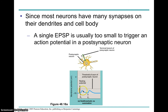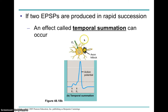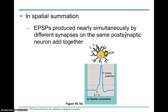For example, we have an EPSP that is too small to elicit an action potential because it doesn't reach threshold, followed by another EPSP, also too small. But here we have temporal summation, where if they are fired in quick succession or arrive at the postsynaptic cell at approximately the same time, they get added or summed together, making it strong enough to reach threshold and thus fire an action potential. This is called temporal summation — summation in regard to time.